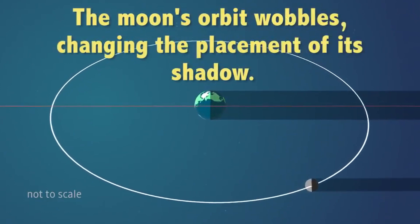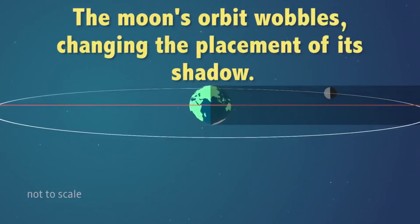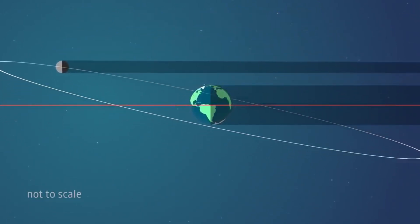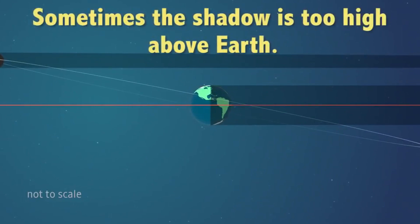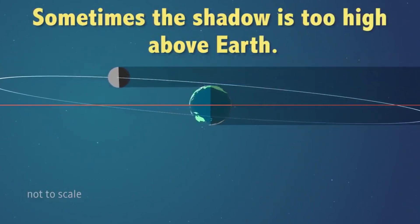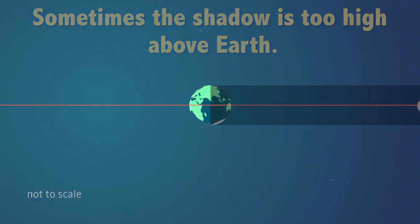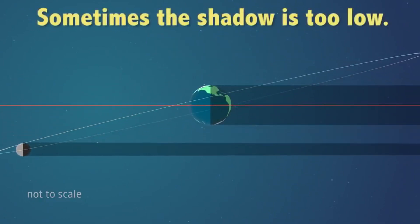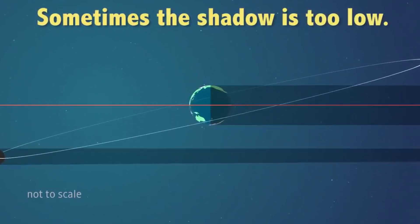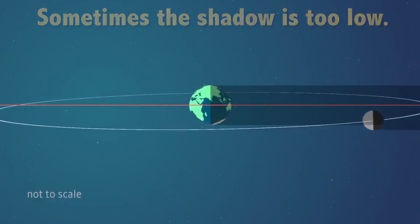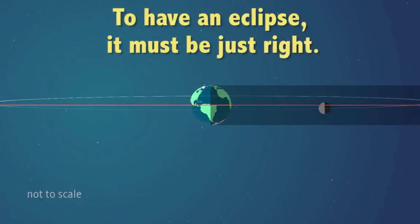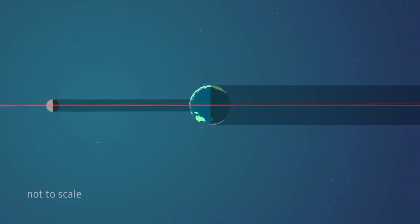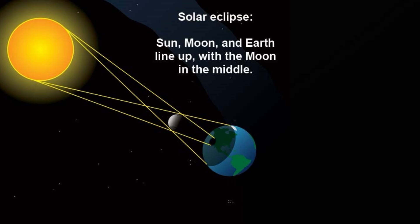New moon phase. A solar eclipse can only happen during a new moon, when the moon is between earth and the sun. Line of nodes. The moon's orbit around earth is tilted about five degrees relative to earth's orbit around the sun. Eclipses occur only when the moon crosses the ecliptic plane at points called nodes. If this happens during a new moon, an eclipse is possible.